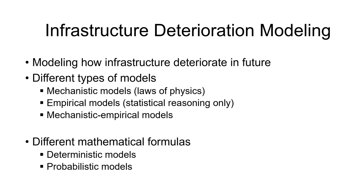What I will be talking about is infrastructure deterioration modeling. Physical infrastructure or tangible infrastructure deteriorates over time, and a key question in asset management is how to predict this deterioration in the future. If you have a piece of road or a sewer — it doesn't matter what kind of infrastructure — it's going to deteriorate, and as an asset manager it's our job to predict it. There are different types of models to do this, and they can be classified into a variety of categories from different perspectives.